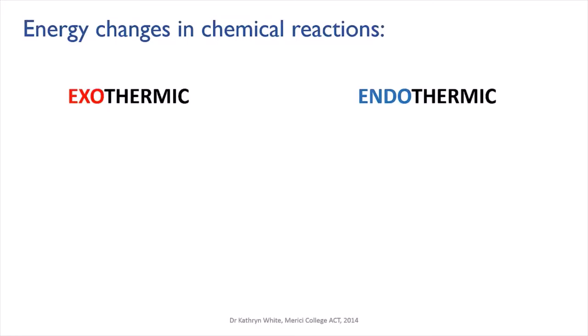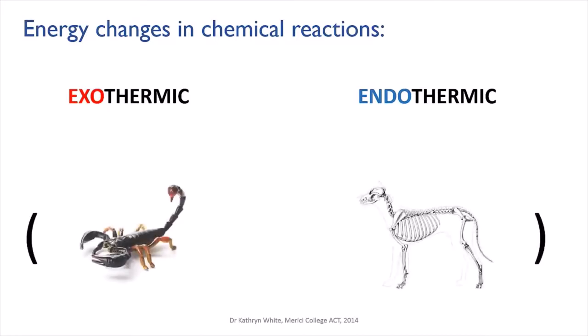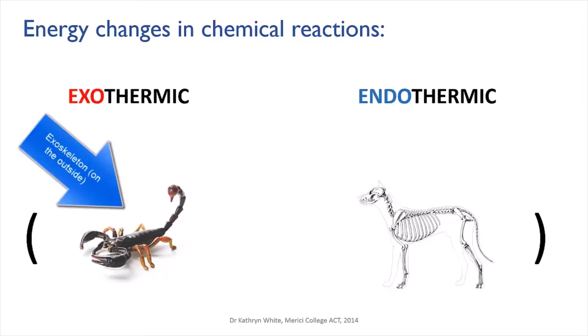If you have trouble remembering which is which, think of a biology analogy: insects, spiders, crabs — creatures like that have an exoskeleton, meaning their hard supportive structures are on the outside. Whereas vertebrates, including us, have skeletons on the inside — the proper name for this is an endoskeleton. So exo means outside and endo means inside.